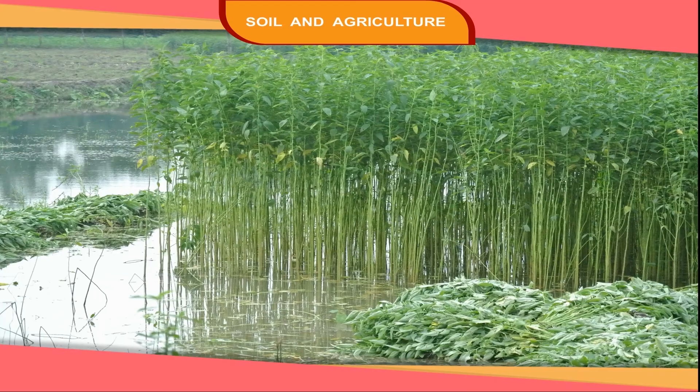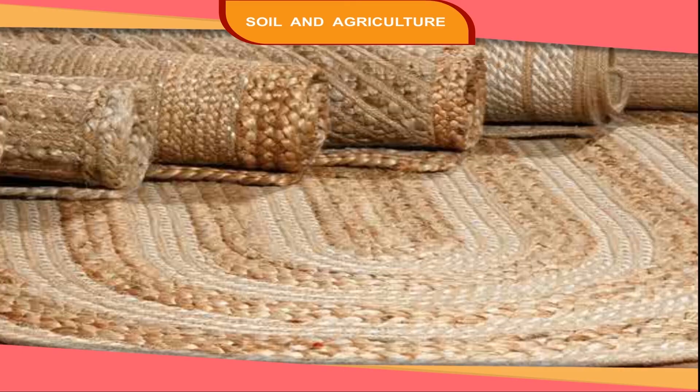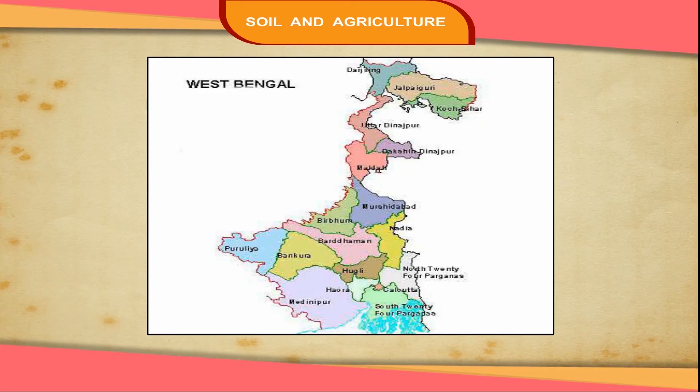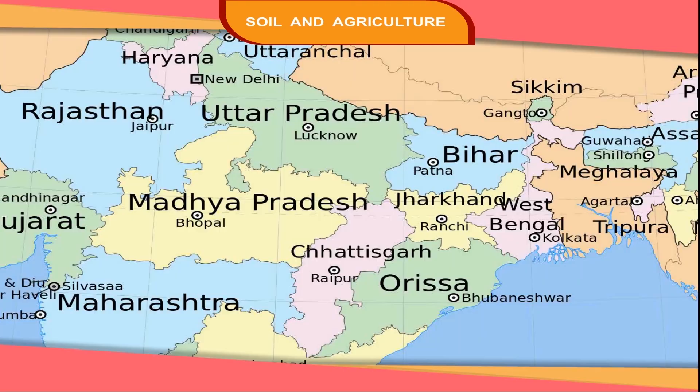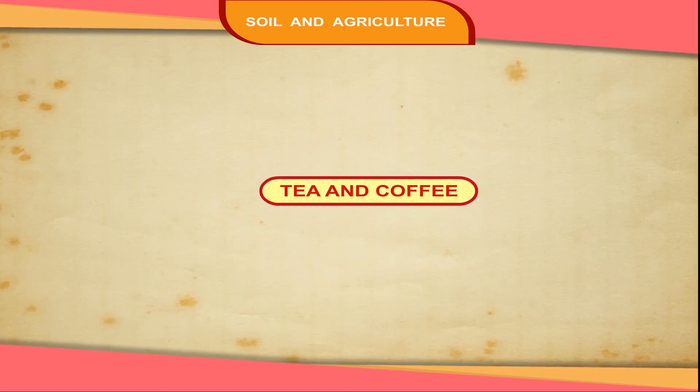Jute is called the golden fibre of India. It is used to make ropes, bags and carpets. West Bengal, Bihar and Orissa are the main producers of jute.